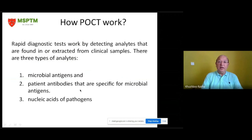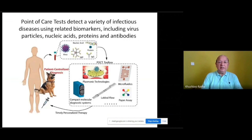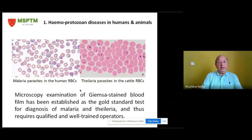All scientists are supposed to follow this criteria while developing point-of-care tests. Rapid diagnostic tests work by detecting analytes found in or extracted from clinical samples. There are three types of analytes: number one, microbial antigens; number two, patient antibodies specific for microbial antigens; and number three, nucleic acids of the pathogens. Point-of-care tests detect a variety of infectious diseases using related biomarkers including virus particles, nucleic acids, proteins, and antibodies.